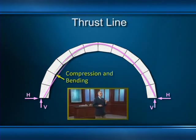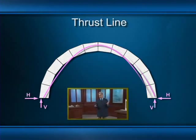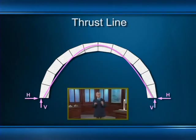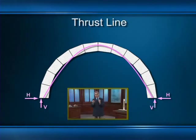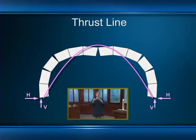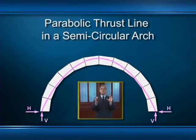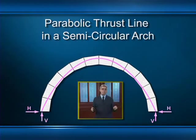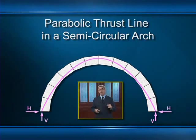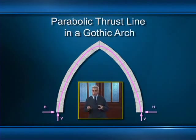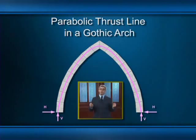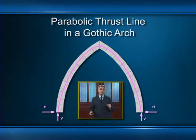If any portion of the thrust line falls outside the boundaries of the arch, the bending stress gets so large that it causes the joints between the voussoirs to open up, the arch becomes unstable, and it collapses. Roman semicircular arches have survived from antiquity because they're thick enough to completely contain that parabolic thrust line. One reason why pointed Gothic arches are often so much thinner than semicircular Roman arches is because the parabolic thrust line fits much more comfortably within the pointed arch shape.